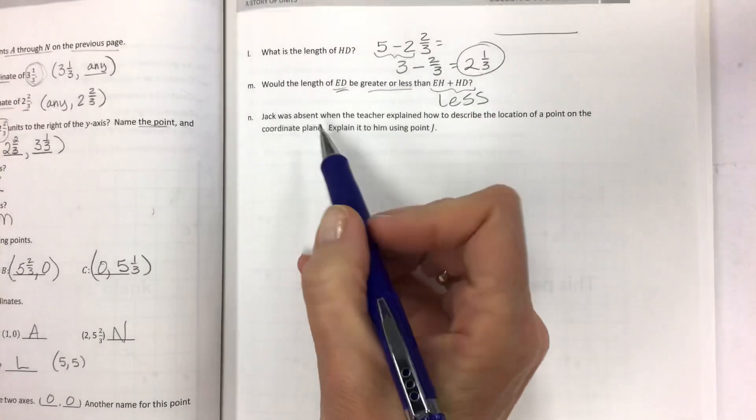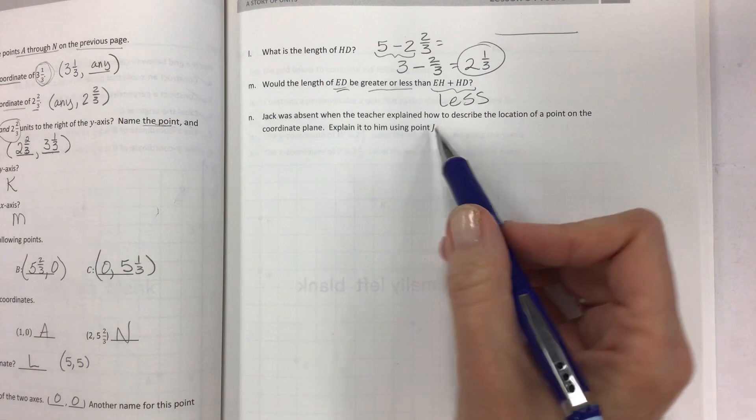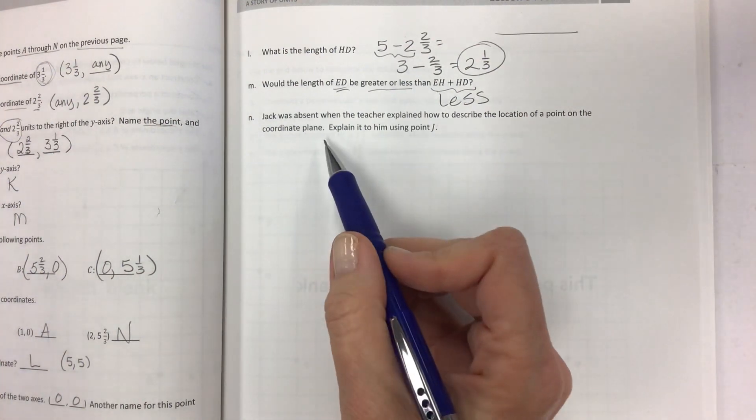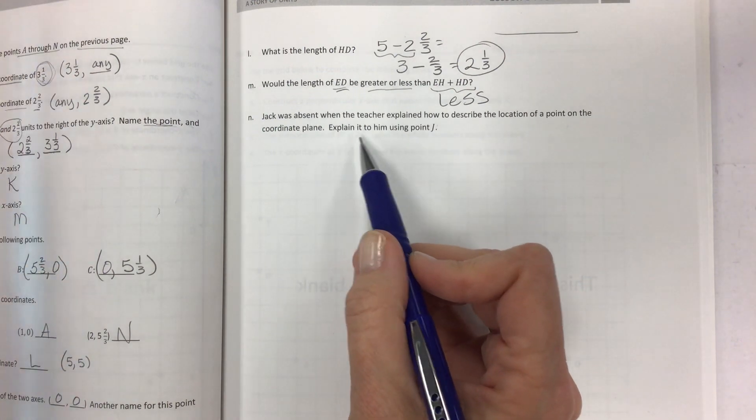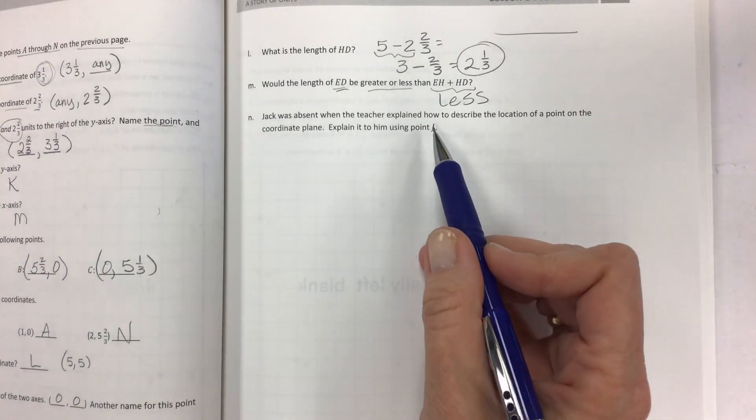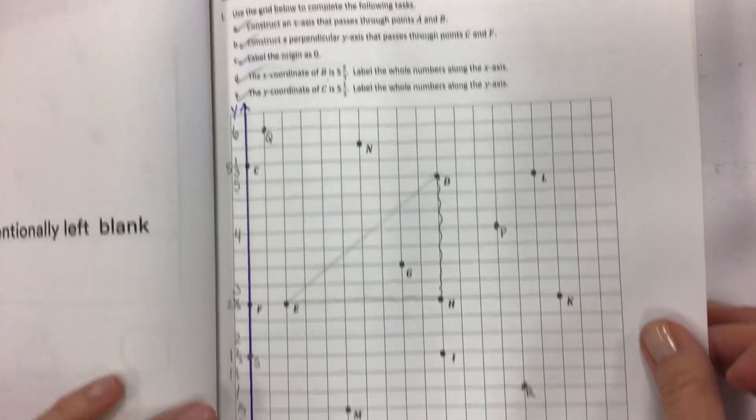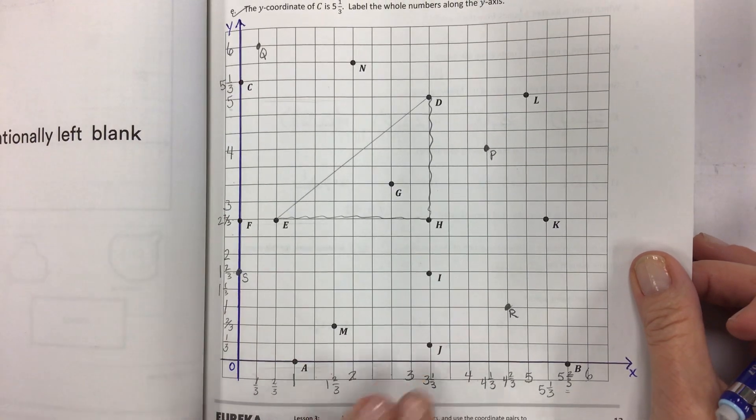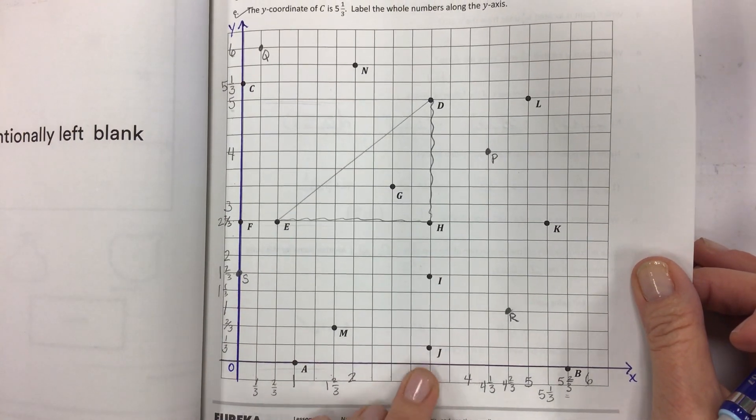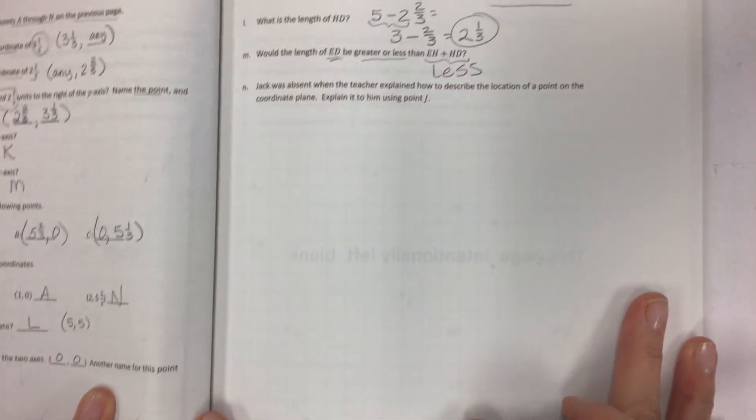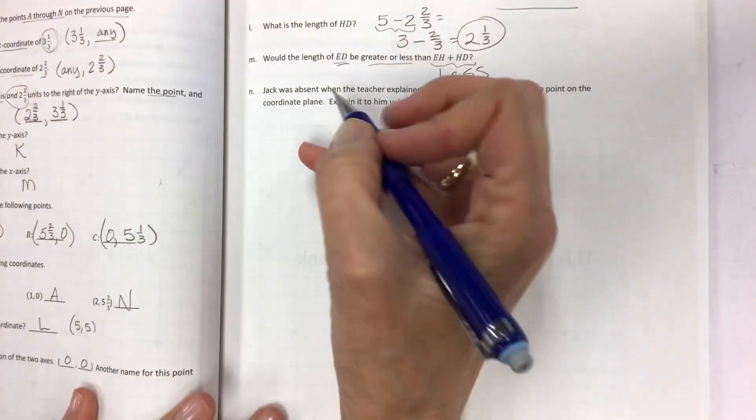And then last one, Jack was absent when the teacher explained how to describe the location of a point on the coordinate plane. You explain it to him using point J. So point J is right down here. So how could you explain this? And so there are just a few things that you want to really, really lock in about coordinate grids.